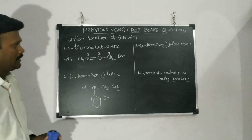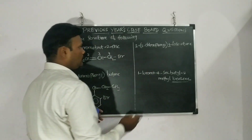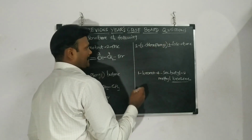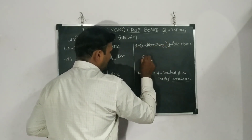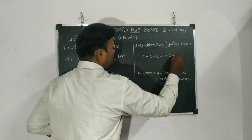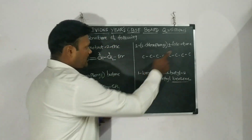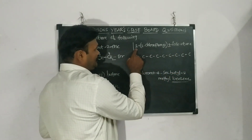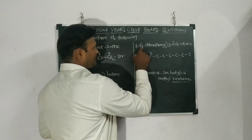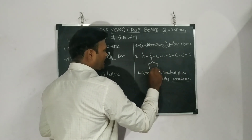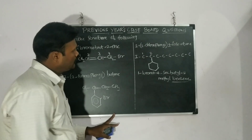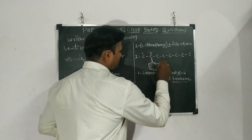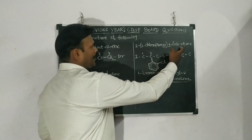The third one: 1-iodo-2-(2-chlorophenyl)octane. Total carbon atoms is eight: one through eight. The first position has iodo, so I written iodo. Now at the second position there is a bracket with a chlorophenyl group. We draw a phenyl ring and put a chlorine at position two on the ring. That gives us 1-iodo-2-(2-chlorophenyl)octane. We then satisfy all remaining positions with hydrogens.